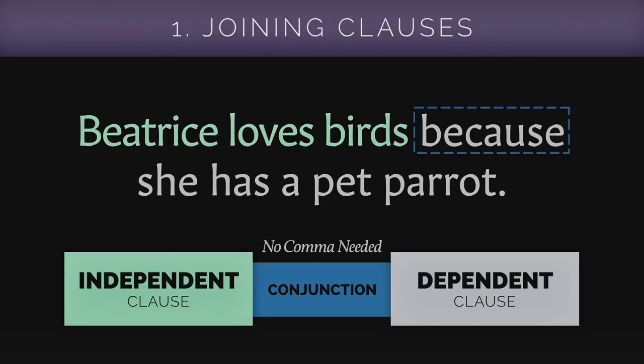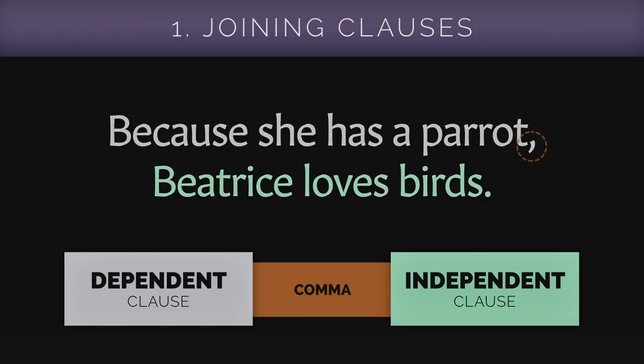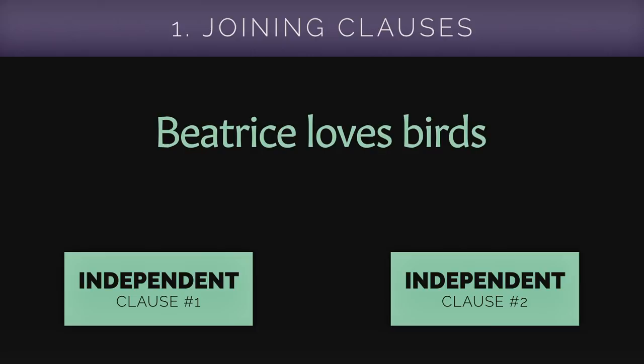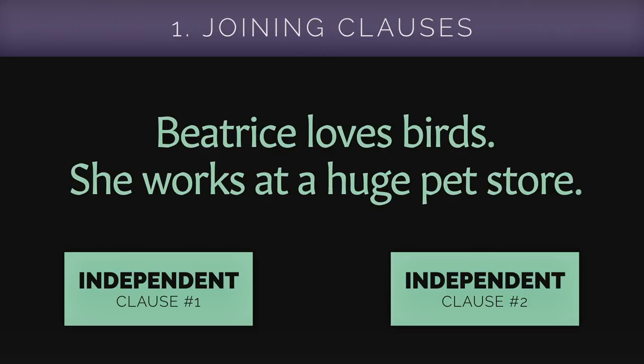Commas can also be used to combine two independent clauses. Let's say you want to express that Beatrice loves birds, but also that she works at a huge pet store. We could have two separate sentences, but since they are related, we can combine them. To connect these independent clauses, we need a comma and a different kind of conjunction called a coordinating conjunction.